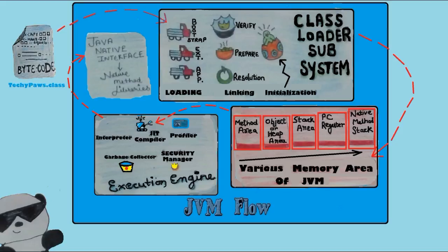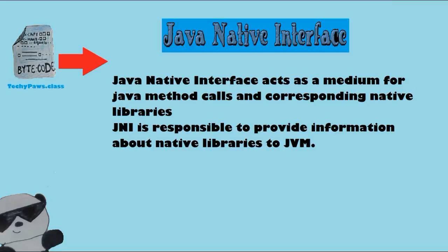The execution engine is responsible for executing Java class files. It has two main parts: the interpreter and the JIT (Just-In-Time) compiler. The interpreter reads the code line by line. The JIT compiler helps the interpreter identify repeated code — a profiler identifies the repeated code, and at a particular threshold value the repeated code is compiled to machine code and saved for future use. The execution engine also includes a garbage collector and security manager. There is also a Java Native Interface (JNI) which helps run native method libraries.